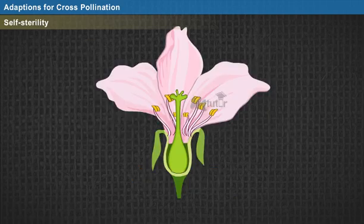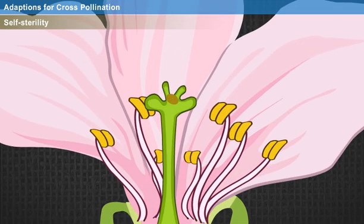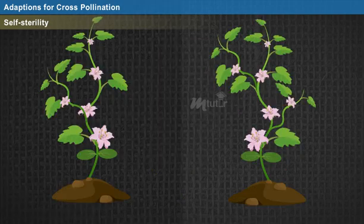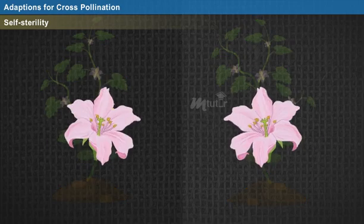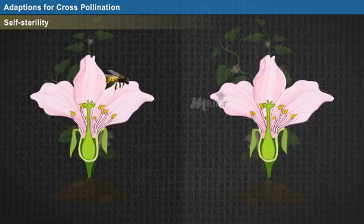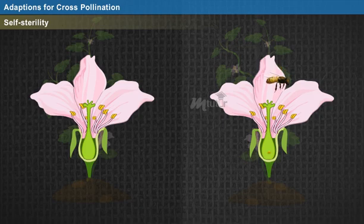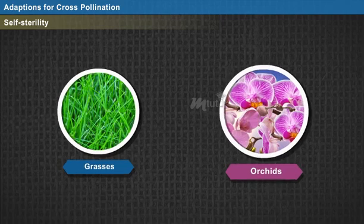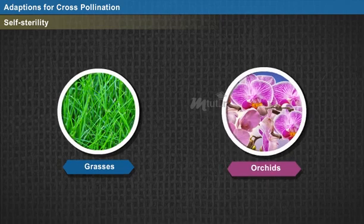Self-sterility is a condition wherein a flower fails to germinate the pollen grains which fall on the stigma of the same flower. However, when these pollens are carried to other flowers, germination occurs through cross-pollination. Examples of plants exhibiting self-sterility are grasses and orchids.